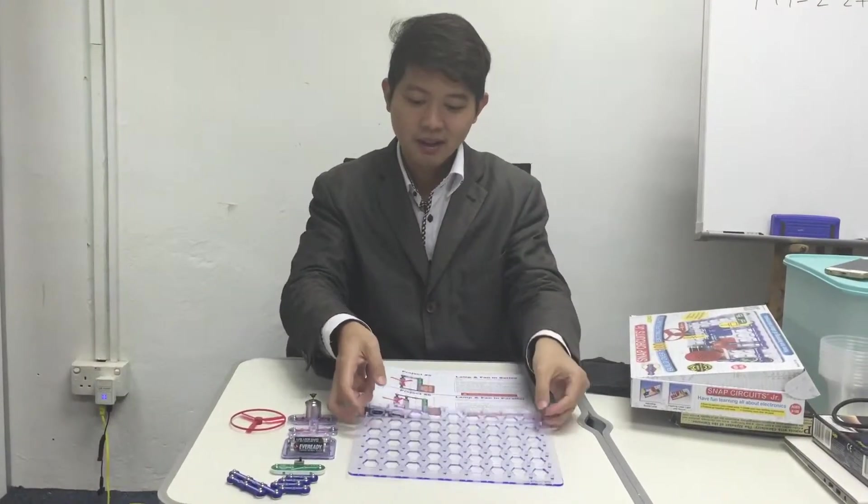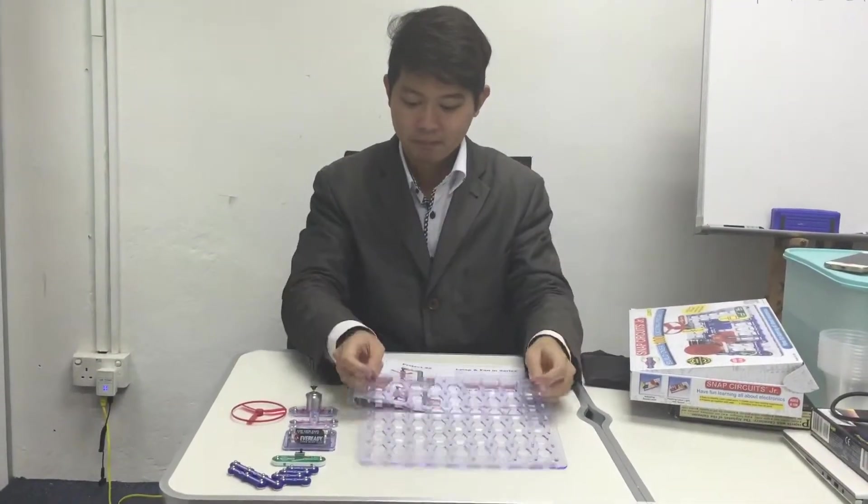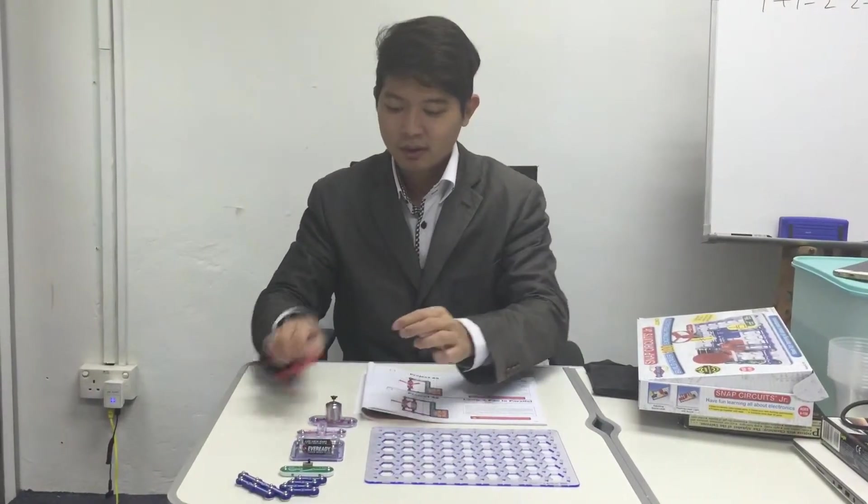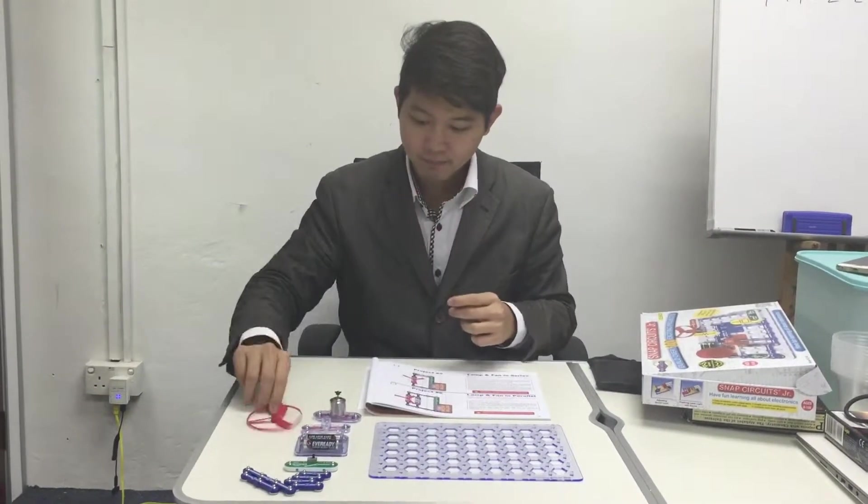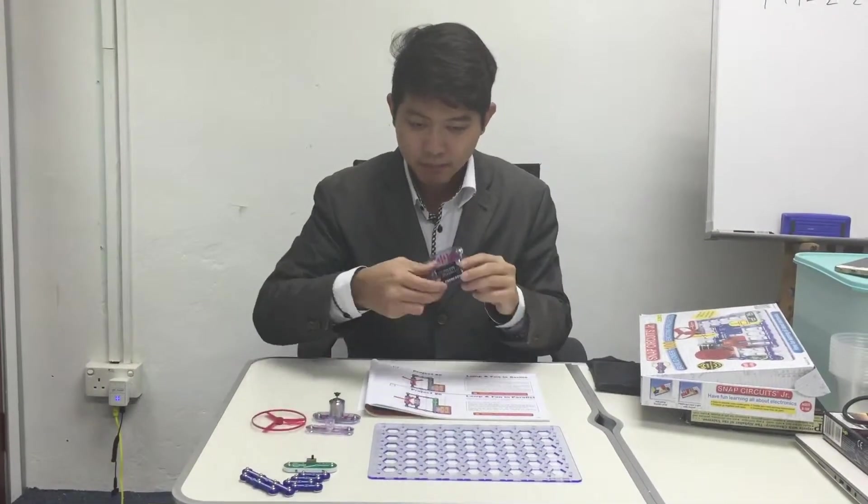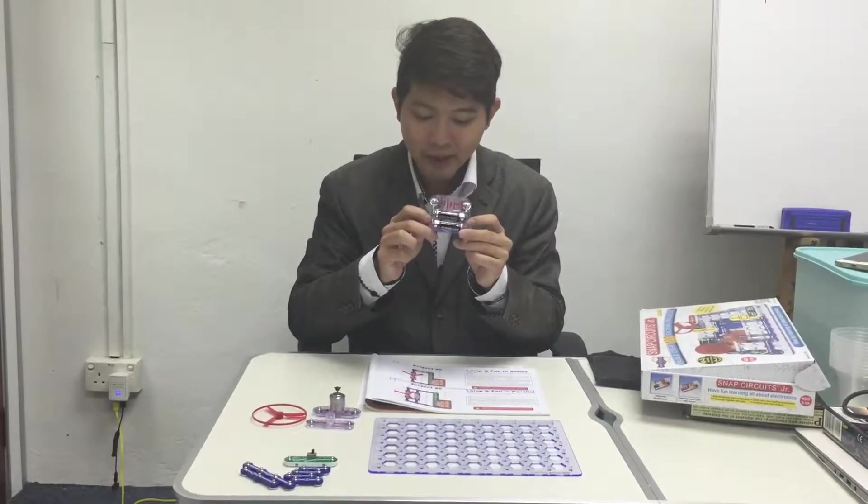You are going to need the circuit board, the motor, motor with blade, lamp, and batteries with 2 double A batteries.